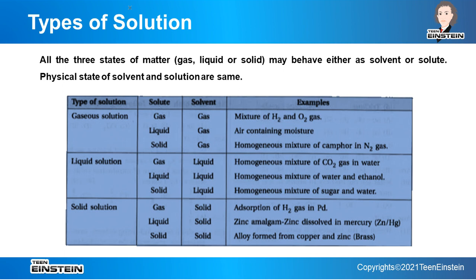Now, types of solution. We have already discussed that the physical state of solvent and solute need not be the same, but the final physical state of the solution and the original state of the solvent must be the same. Since all three states of matter — gas, liquid, and solid — can be either solvent or solute, a total of nine types of solutions are possible through permutation and combination.